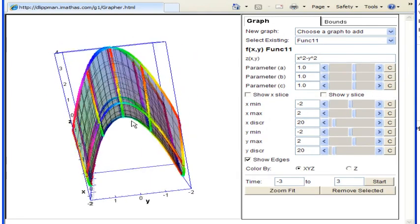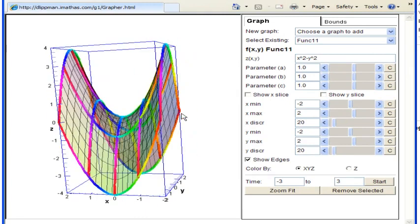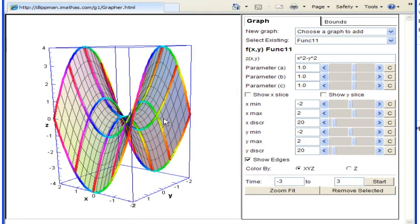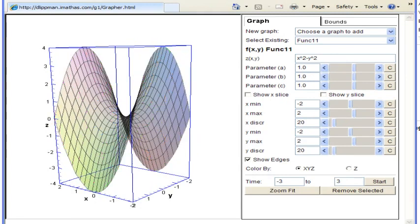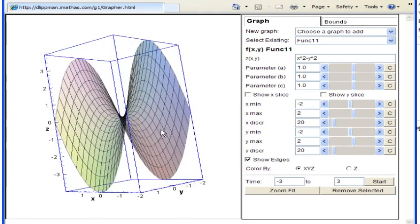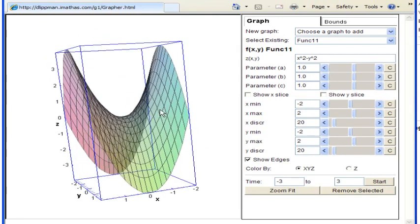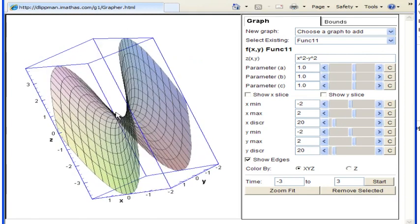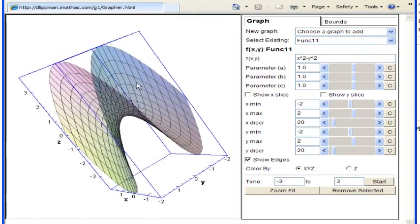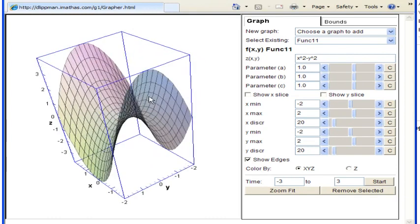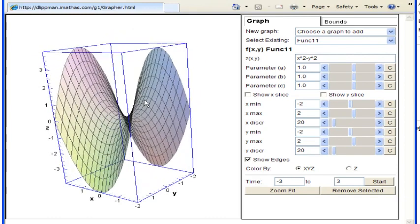This is sometimes called a saddle shape, because of the sort of curving up in one direction and the curving down in the other direction. Taking out the grid curves, or the traces there, can also help us see the shape of the graph. This is sometimes also called a hyperbolic paraboloid, because of the parabolic nature of the graph, and because if we were to slice it with z constant, we would get hyperbolas as our traces in that direction.